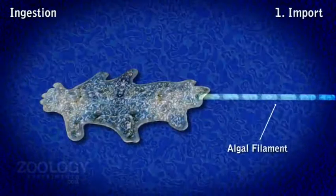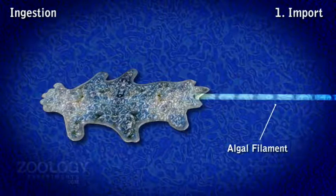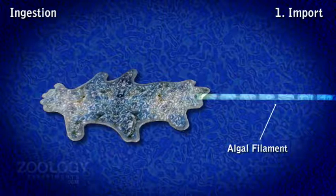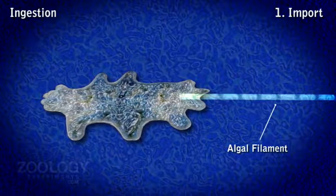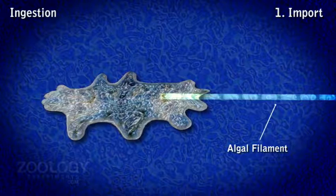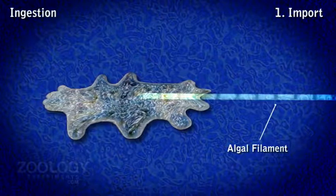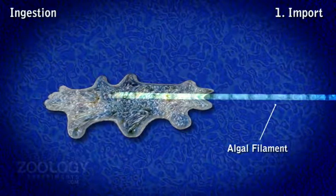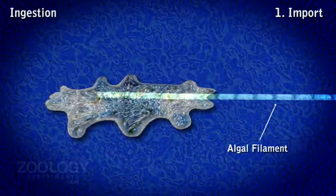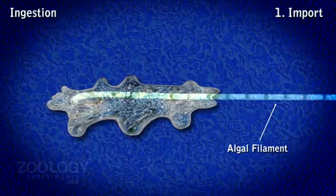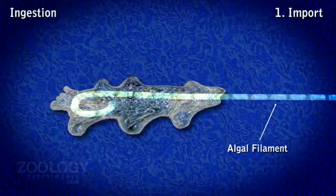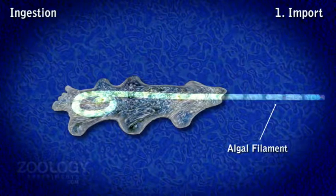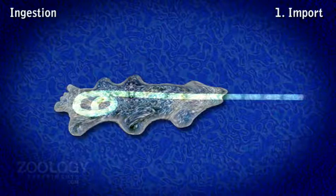1. Import: This method involves the taking in of food such as an algal filament on contact. The food passively sinks into the body by rupturing the plasma lemma and ectoplasm at the point of contact. The ruptured site soon heals up.